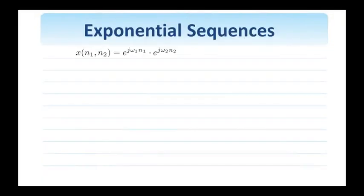Complex exponentials are very important signals in digital signal processing. Here we see a two-dimensional complex exponential at frequencies omega 1 and omega 2. They're important for at least two reasons. The first one is that they're eigenfunctions of linear and spatial invariant systems.